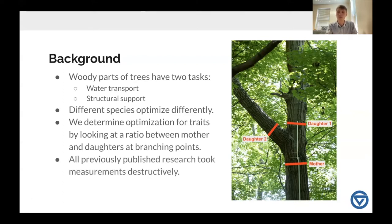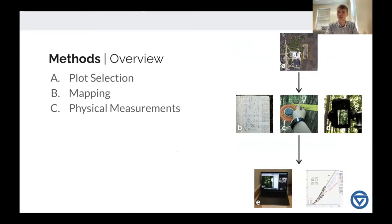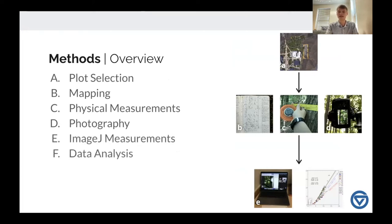Previously, all published research on this topic has been destructive. What we in the Greer lab are trying to do is conduct this non-destructively. For my specific study, over the summer I selected a plot in the GVSU ravines, mapped out boundaries and the location of individuals, took physical measurements, photographed all the trees and their first nodes, measured those images in ImageJ, and then did data analysis.